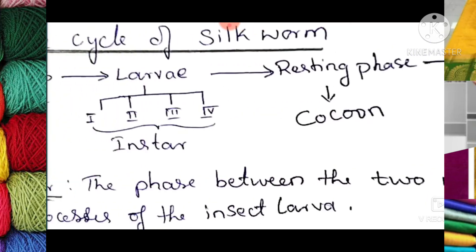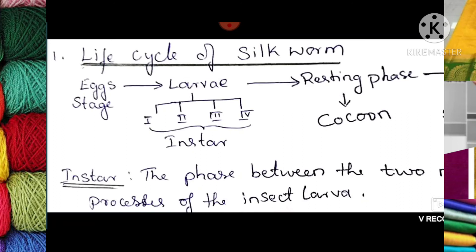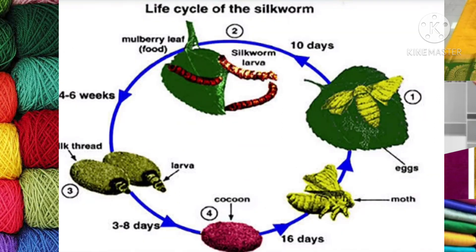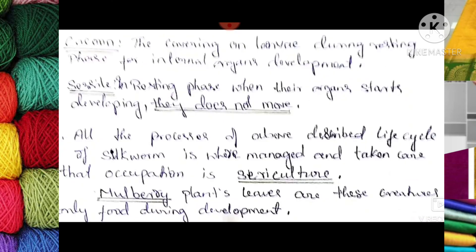The instar is the phase between two moulting processes of the insect larvae, where the larvae turns into a worm shape. During the resting phase, internal organs develop inside the cocoon. In this stage the insect is sessile — it does not move while it is inside the cocoon.